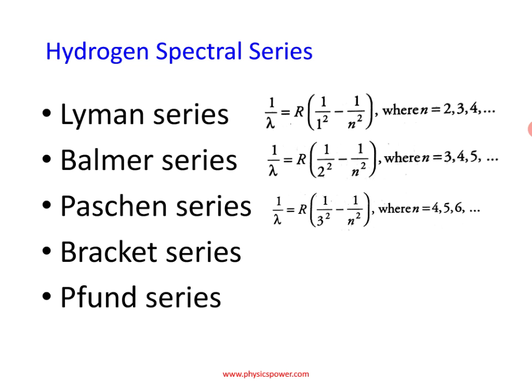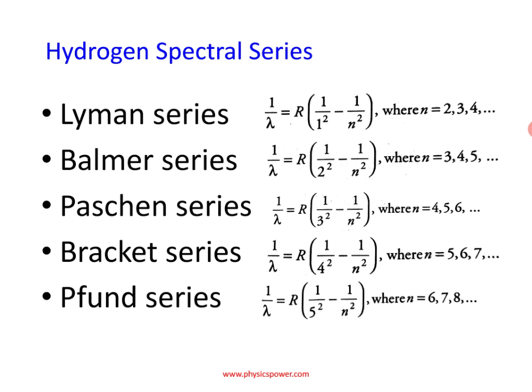The remaining series are simple to analyze. If an electron jumps from any higher energy state to the fourth energy state — minimum it should be five, so five or more to fourth — you will get the energy in the Brackett series. Next, if an electron jumps from a higher energy state to the fifth energy state, you will get the lines in the Pfund series.